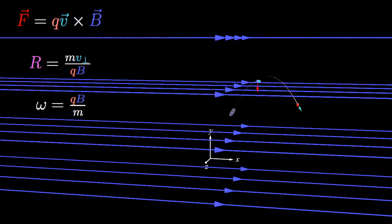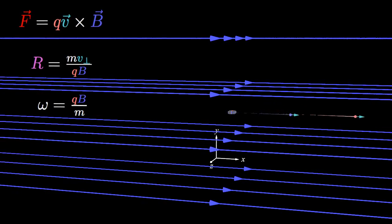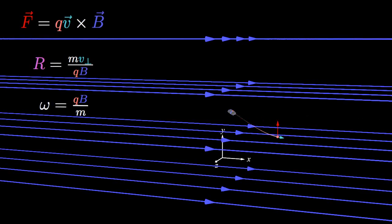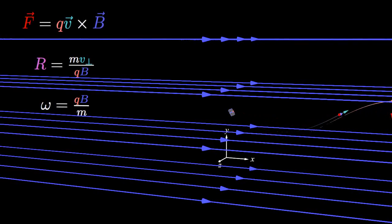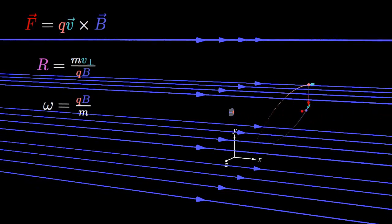The component of velocity parallel to the magnetic field determines the part of the motion along the magnetic field lines. The component of velocity perpendicular to the magnetic field determines the circular motion around the magnetic field lines. The net result is helical motion, where the charges spiral around the magnetic field lines.